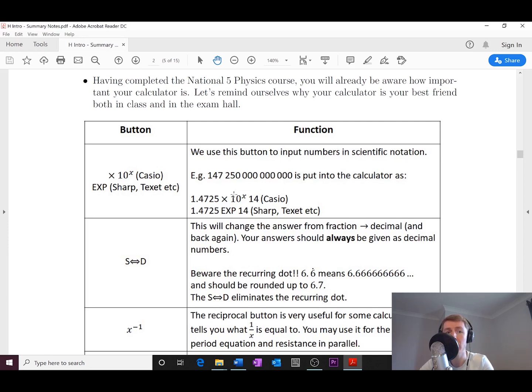None of this typing the times button and then the one and then the zero and then the power button. There's no need for that. It's got buttons for it, so you need to use them. Times 10 to the x button for the Casio and EXP button for a Sharp or a TExIT.